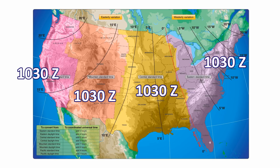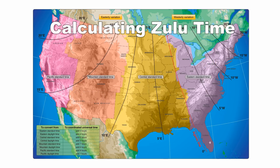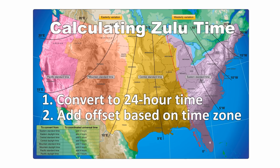No more time zone confusion. Now that we've seen what Zulu time is, let's see how to calculate it. It's a two-step process: first you convert your local time to 24-hour time, then you add an offset based on your time zone.